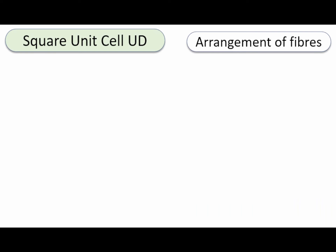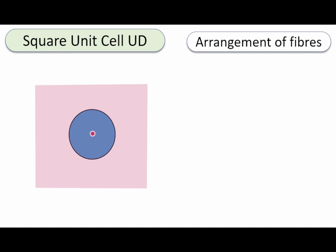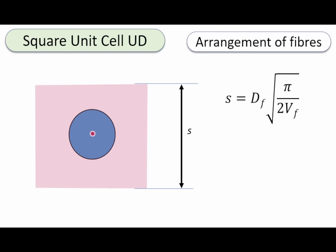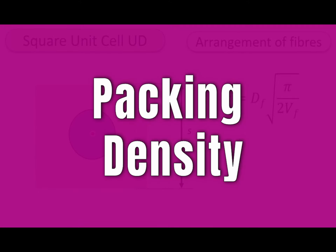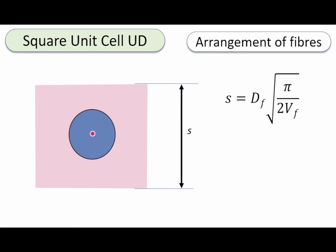Let's think about the design of the unit cell and the arrangement of the fiber. We start with the fiber, which has a square arrangement. Some parameters we need to be aware of are: the edge size of this square arrangement, which can be calculated using a function relating the edge length to the fiber diameter and volume fraction. This gives you an idea of the packing density of this square arrangement.